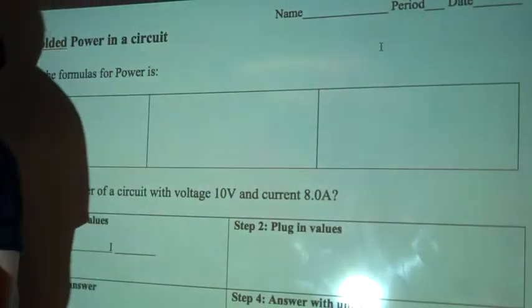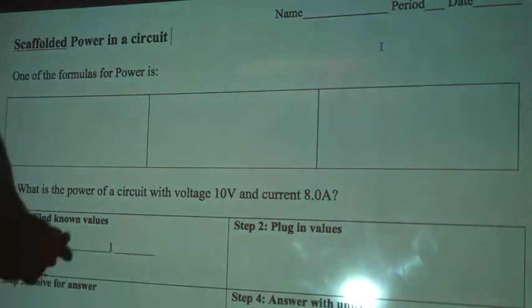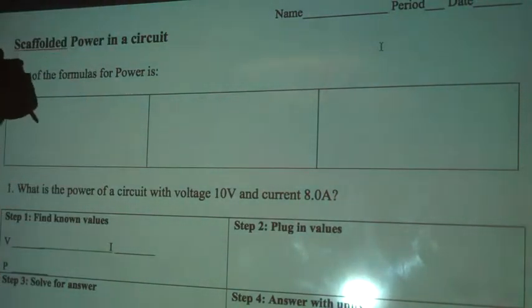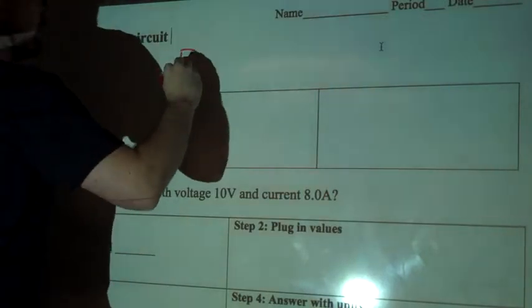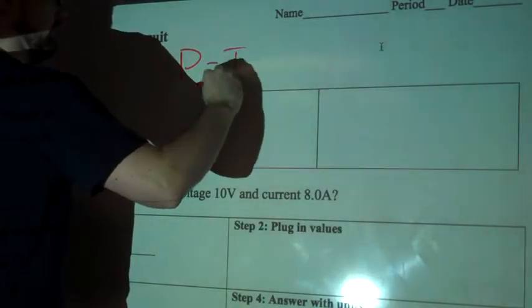So when we're talking about power in a circuit, there are a couple different formulas we can use. The most simple formula is P equals IV.